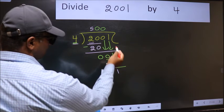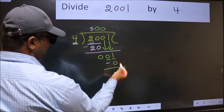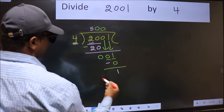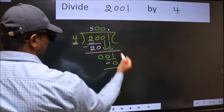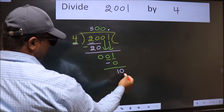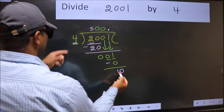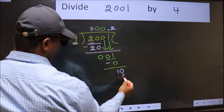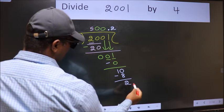Over here we did not bring any number down, and 1 is smaller than 4. So now we can put dot and take 0. So 10. A number close to 10 in the 4 table is 4 times 2, 8. Now we should subtract, we get 2.